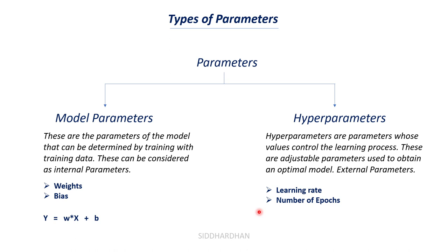For instance, in logistic regression we have a parameter called max_iter — the maximum number of iterations — with a default value of 100, which you can also set to 1000. Apart from these, there are other hyperparameters, and hyperparameters change for different models, just as model parameters differ across models.